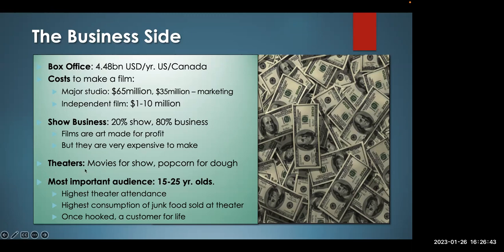Speaking about theaters: movies for show, popcorn for dough. The movies get you into the theater, but the profit for the theater owner is in the concessions — all that popcorn and candy they can mark up precipitously. The most important audience to them are 15 to 25-year-olds, who have the highest theater attendance, and once they're hooked they're a customer for life.